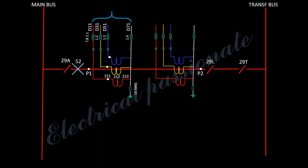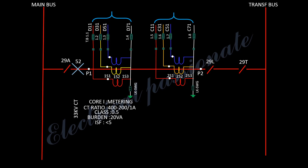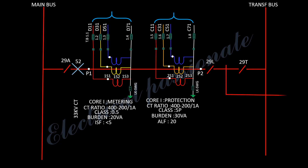This is the protection core. The CT ratio is 400 to 100 by 1 Ampere. When primary current of 400 Ampere is to be measured, secondary terminals 1S1 and 1S3 of the CT are to be used. When primary current of 200 Ampere is to be measured, secondary terminals 1S2 and 1S3 are to be used.